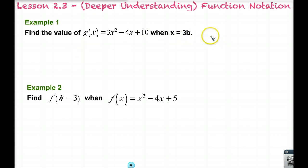it says find the value of g(x) = 3x² + 4x + 10 when x equals 3b. So essentially this means find the function g when we replace all the x's with 3b. Making sure to use parentheses, we have 3(3b)² - 4(3b) + 10. I'm going to do my exponents first. 3 squared is 9, b squared is b², minus 4 times 3b which is 12b plus 10. I just need to take the 3 and multiply it by the 9 to get 18b² - 12b + 10. That would be my final answer.